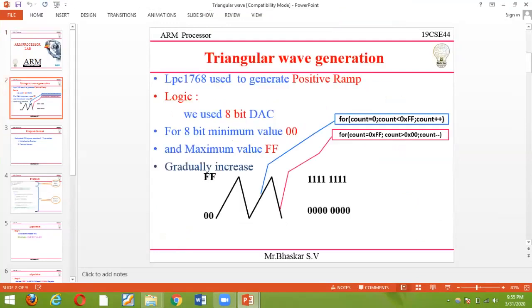Let's see what the logic is. We are using LPC1768 to generate a positive ramp. The logic is we use 8-bit DAC. For 8-bit, the minimum value is 0x00 and maximum value is 0xFF. It's very simple.